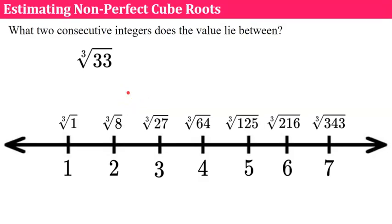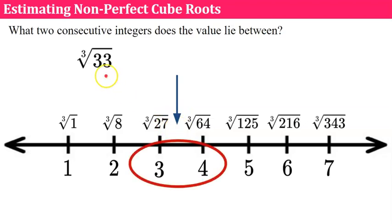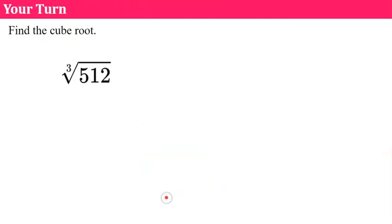Let's talk about estimating non-perfect cube roots. We're asked: what two consecutive integers does the value lie between? Consecutive integers come one right after the other — one and two are consecutive, two and three are consecutive, but one and three are not consecutive. So if I have the cube root of 33, I'm using my number line of perfect cube roots and I note that the cube root of 33 would fall between three and four. If you used a calculator to find it, it would be three-point-something, less than four and greater than three.